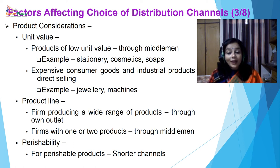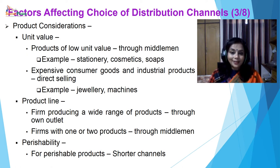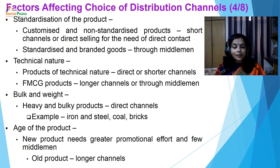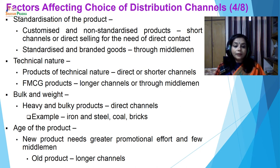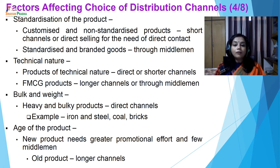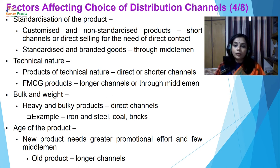Standardization of the product: whether it is customized or non-standardized — for non-standardized products, direct selling can be better; for standardized and branded goods, middlemen can be used. Technical nature of the product: products of a technical nature requiring demonstration, installation, and after-sales service should use direct or shorter channels; for fast-moving consumer goods, longer channels through middlemen can be used. Bulk and weight is another factor: heavy and bulky products like iron and steel, coal, bricks are sold through direct channels. Age of the product: new products need greater promotional efforts and fewer middlemen; old products can use longer channels.